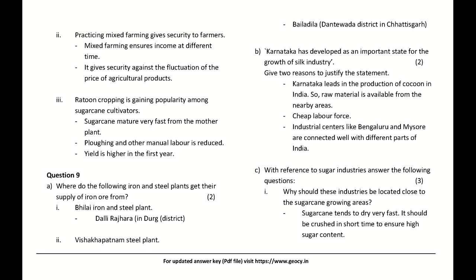Where do the following iron and steel plants get their supply of iron ore? Bhilai Iron and Steel Plant — from Dalli Rajhara in Durg District. Visakhapatnam Steel Plant — from Bailadila, Dantewada District in Chhattisgarh.